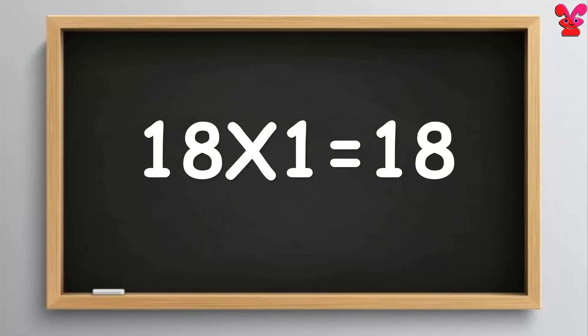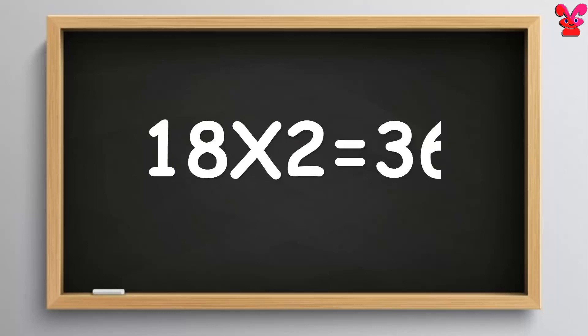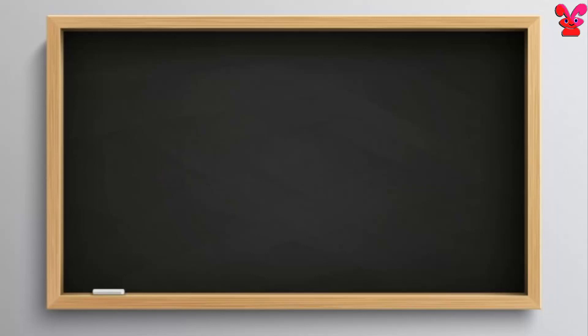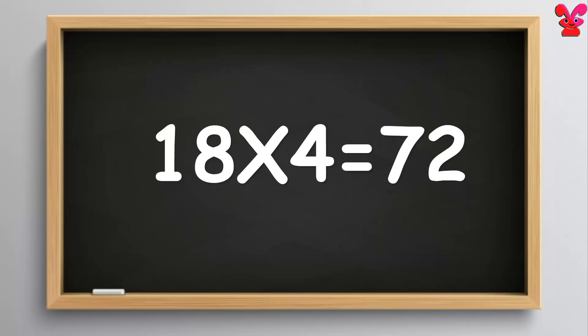18 ones are 18. 18 ones are 18. 18 twos are 36. 18 twos are 36. 18 threes are 54. 18 threes are 54. 18 fours are 72. 18 fours are 72.